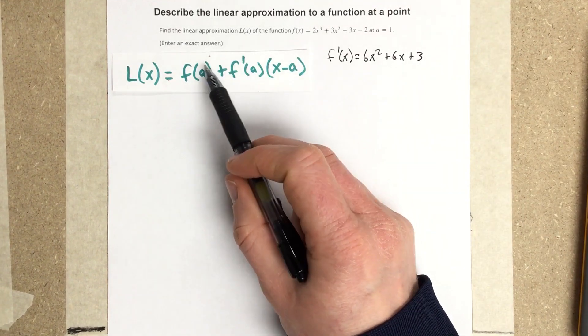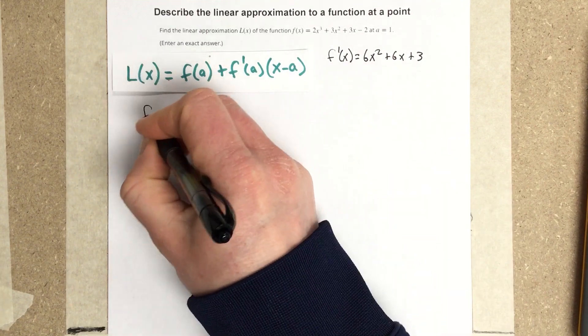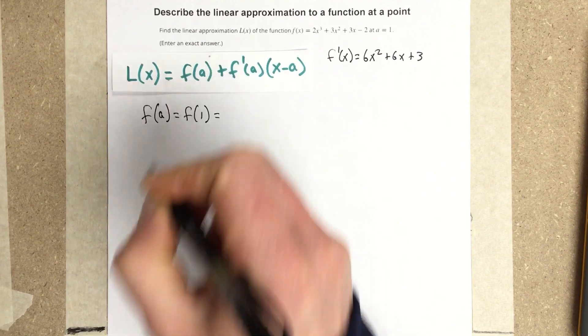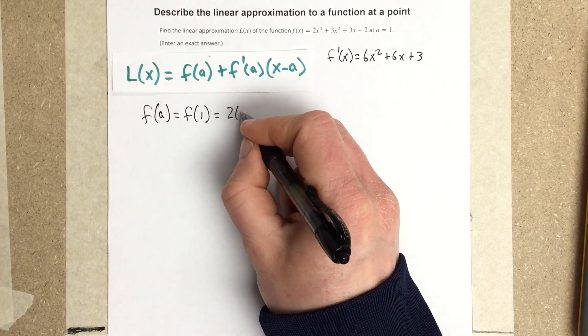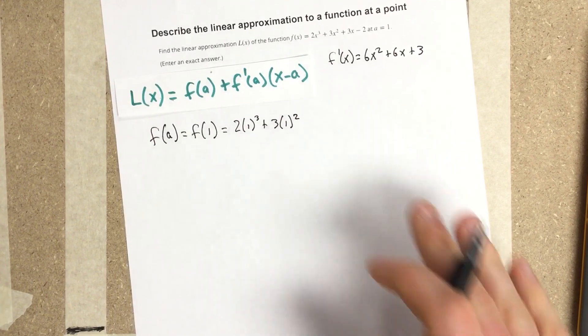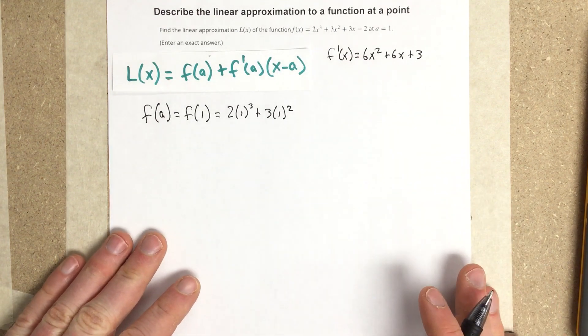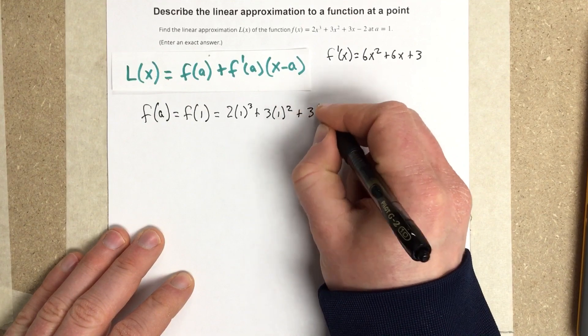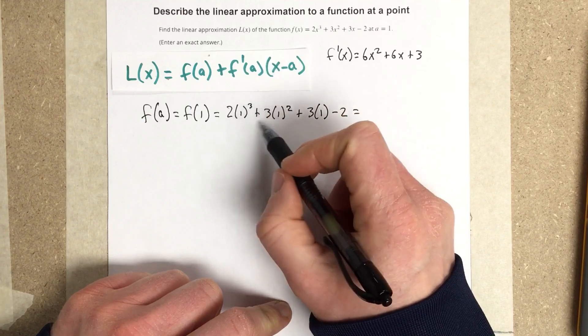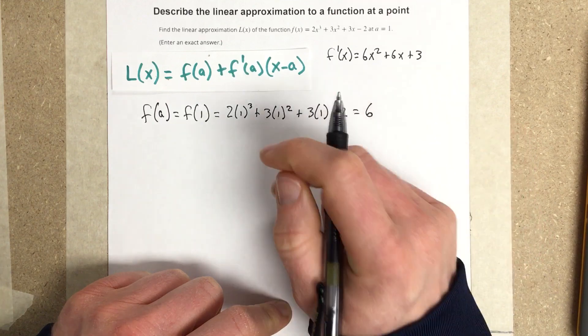Now I need to know the derivative and the original function evaluated at a, which would be 1. So f(a) = f(1) = 2(1)³ + 3(1)² + 3(1) - 2. This is 2 + 3 + 3 - 2, which equals 6 for f(a).